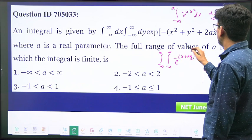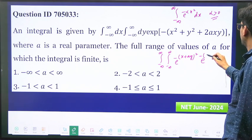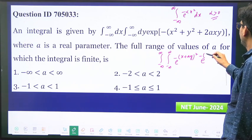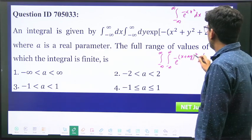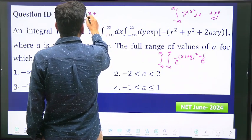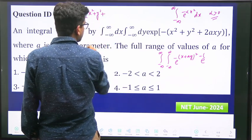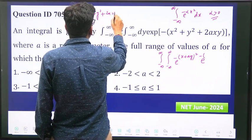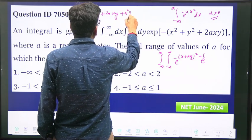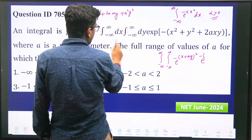And here we will get another term, so try to write this: x² + y² + 2axy and I need +a²y² to make this x² + y² + 2axy.